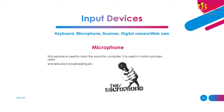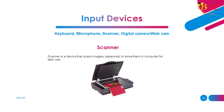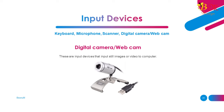Microphone: A microphone is used to input sound to a computer. It is used in motion pictures, radio, and television broadcasting. Scanner: A scanner is a device that scans images, papers, etc. to store them in a computer for later use. Digital cameras/webcams: These are input devices that input still images or video to a computer.